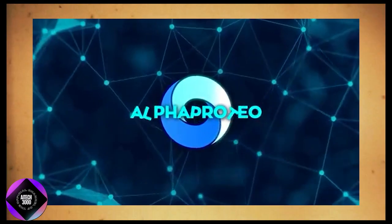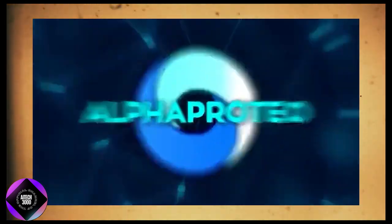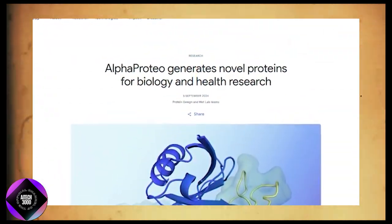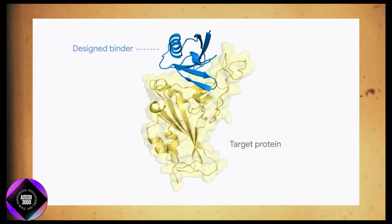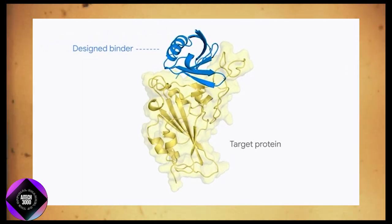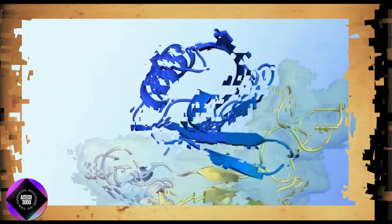That's where things get really exciting. Enter AlphaProteo by Google DeepMind, the new AI system we're discussing today. Unlike AlphaFold, AlphaProteo doesn't just predict. It designs brand new proteins that can bind to specific target molecules.